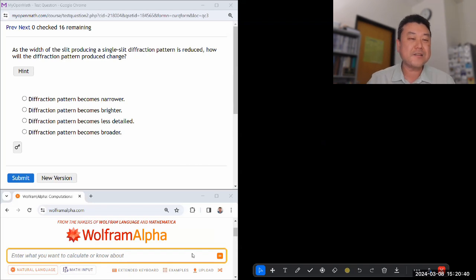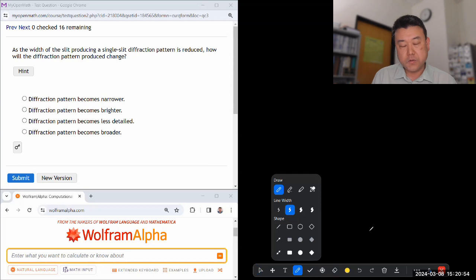So it says as the width of the slit producing a single slit diffraction pattern is reduced, how will the diffraction pattern produced change? So let me give you an answer that is based on formula.